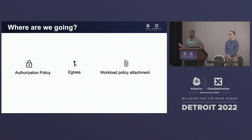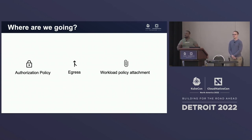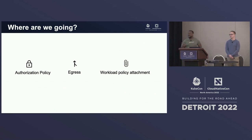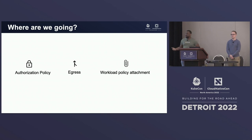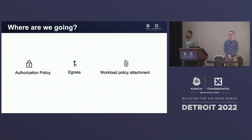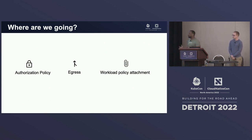Where are we going next? We've taken care of HTTPRoutes, with some follow-up PRs to clarify language. You can see the GEP — Gateway Enhancement Proposal — on the Gateway API website now. What's next on the frontier for GAMMA? One of the big things we're talking about right now is authorization policy. Right now, similar to routing, just about every single service mesh has its own authz mechanism: Istio has authorization policy, OSM has traffic target, Consul has intentions. It's still a fragmented ecosystem.